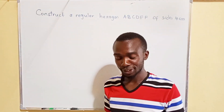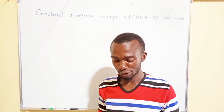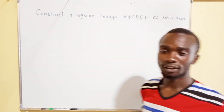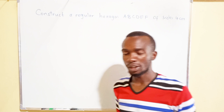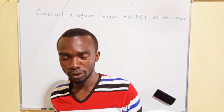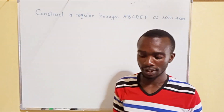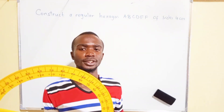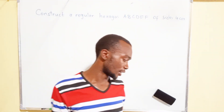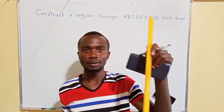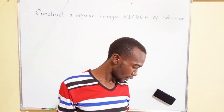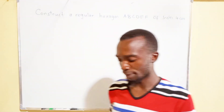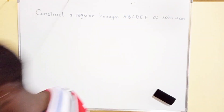Thank you and welcome to today's class. In this tutorial, I'm going to teach about the construction of a regular hexagon. For the construction, we are going to use the construction materials: the compass, the protractor, the whiteboard ruler, and also the marker pen.